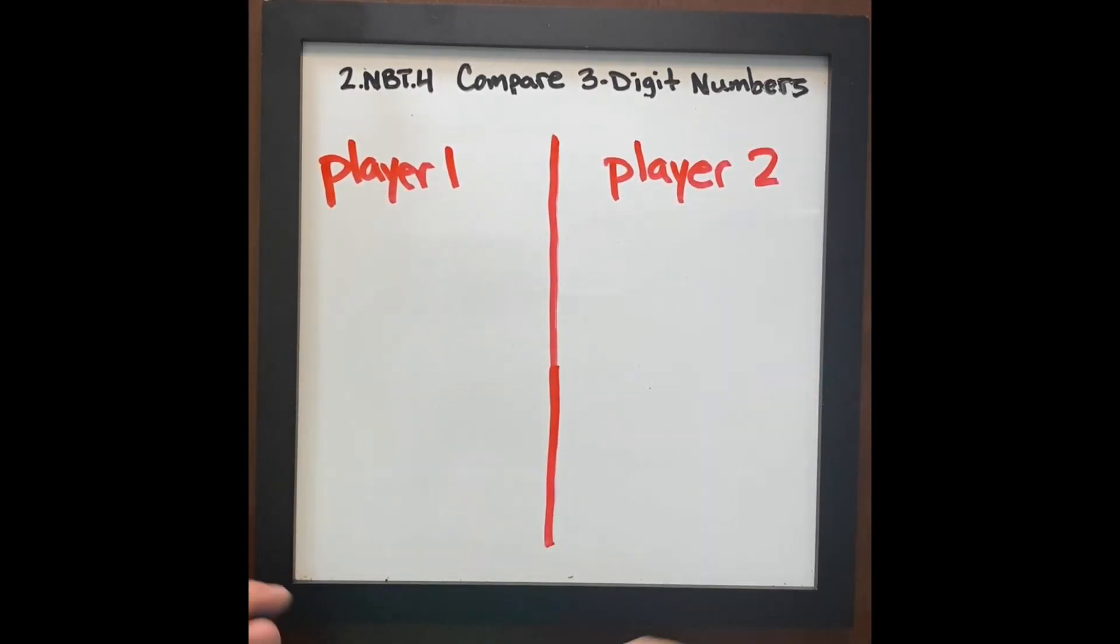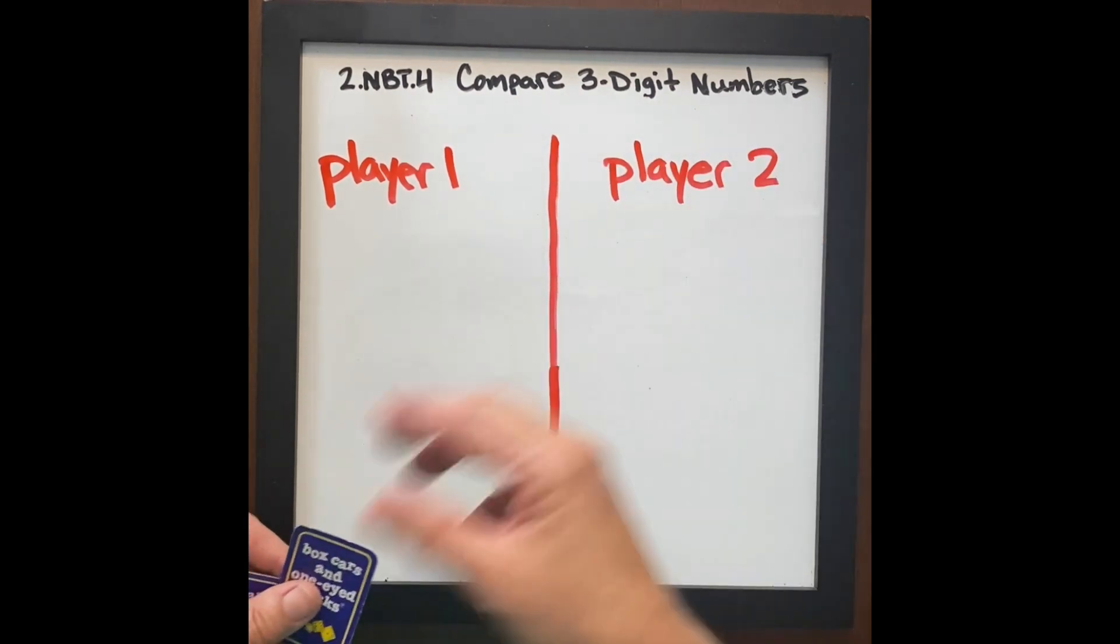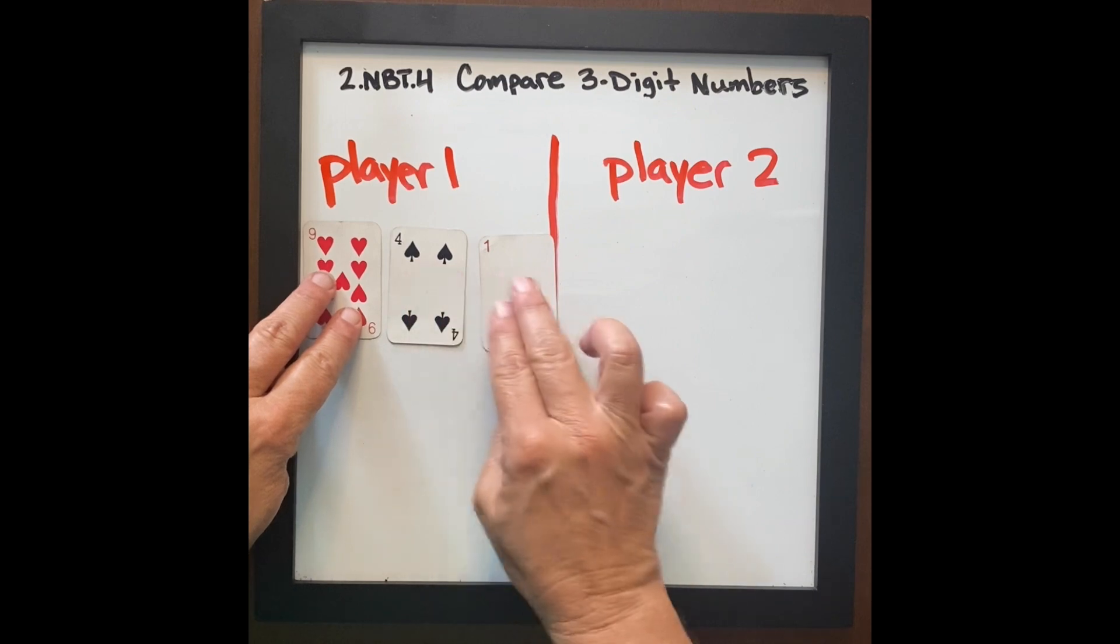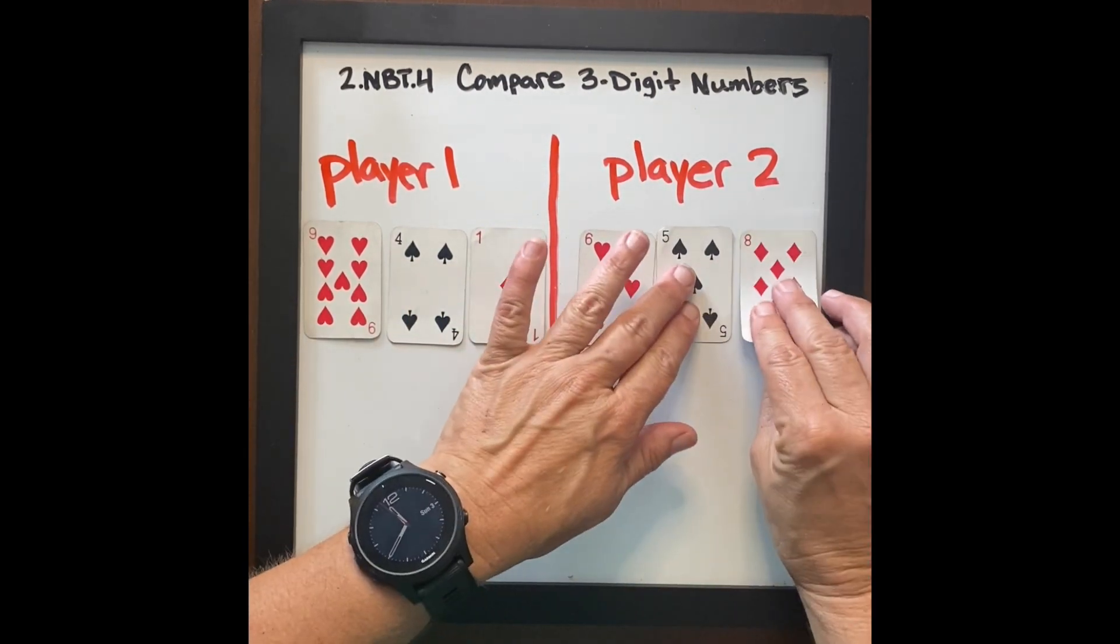We're going to play a game called three-digit face-off where students are comparing three-digit numbers. So we have player one with 941 and player two with 658.